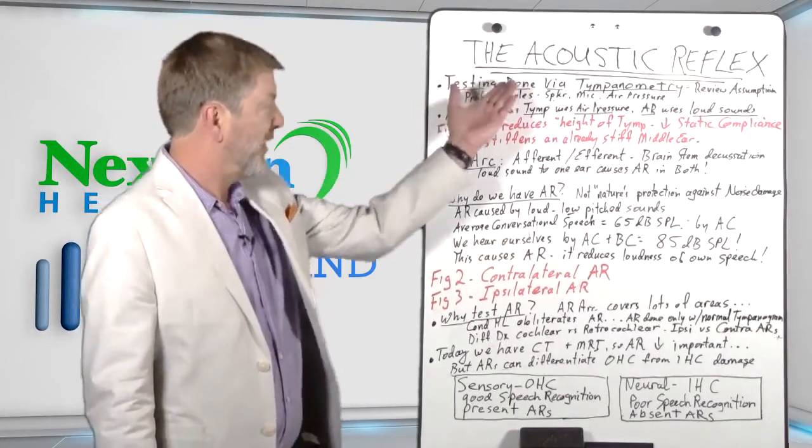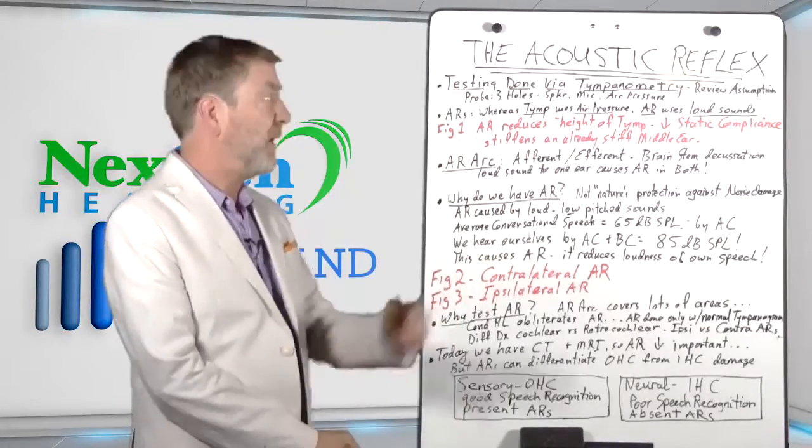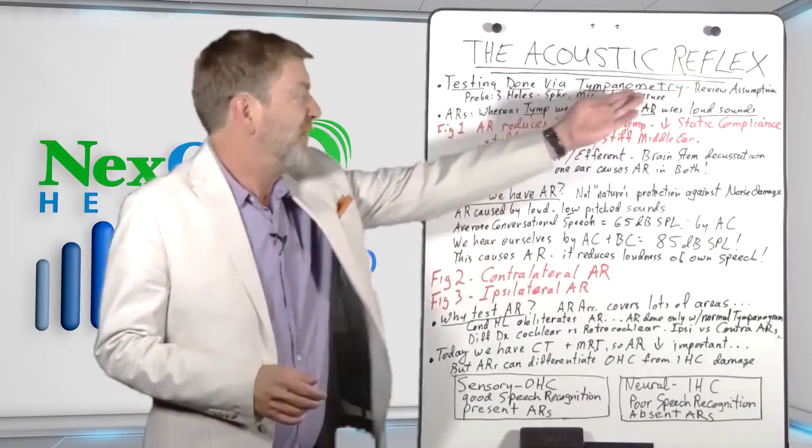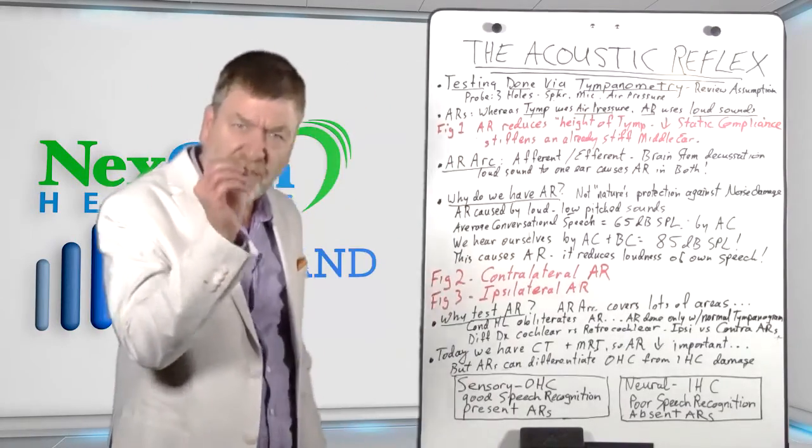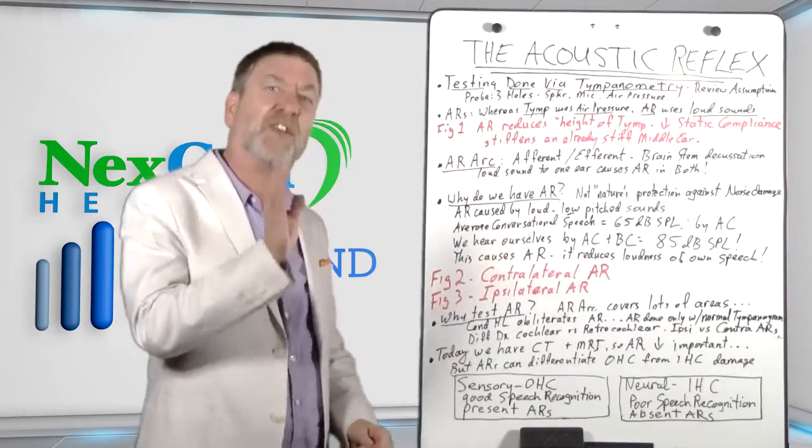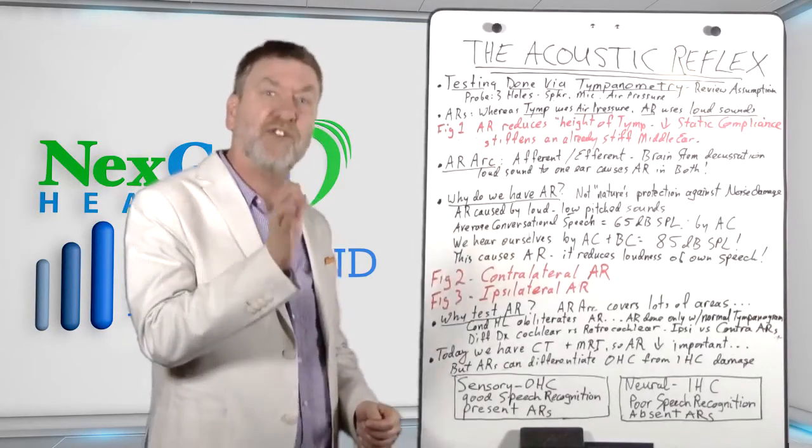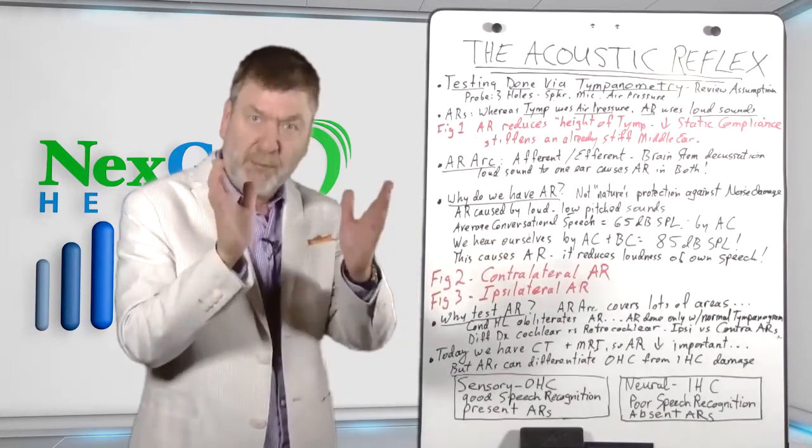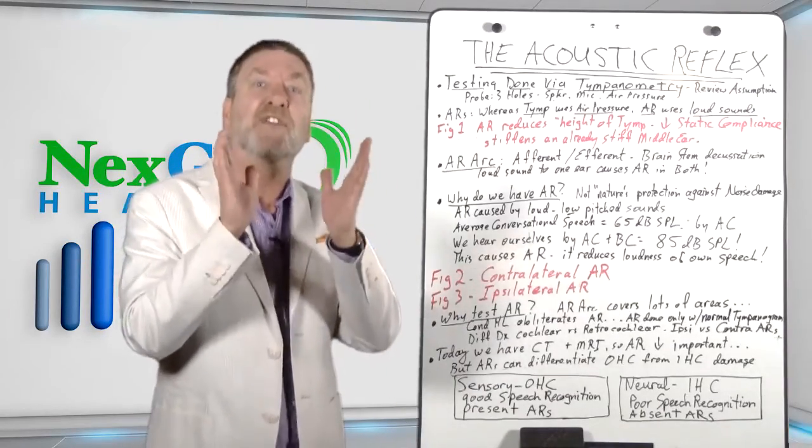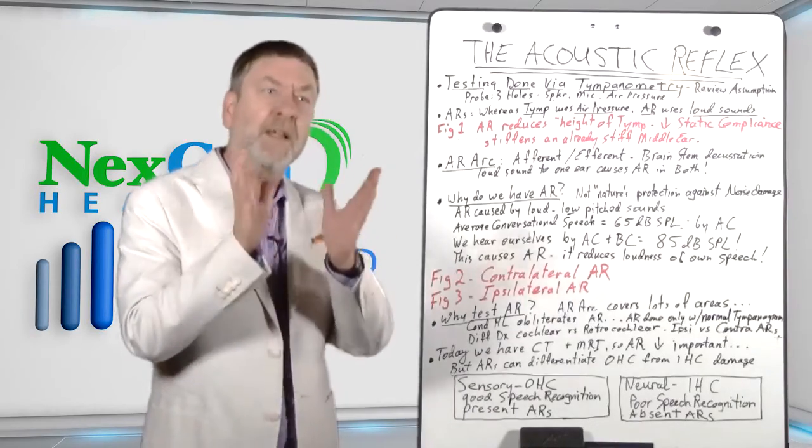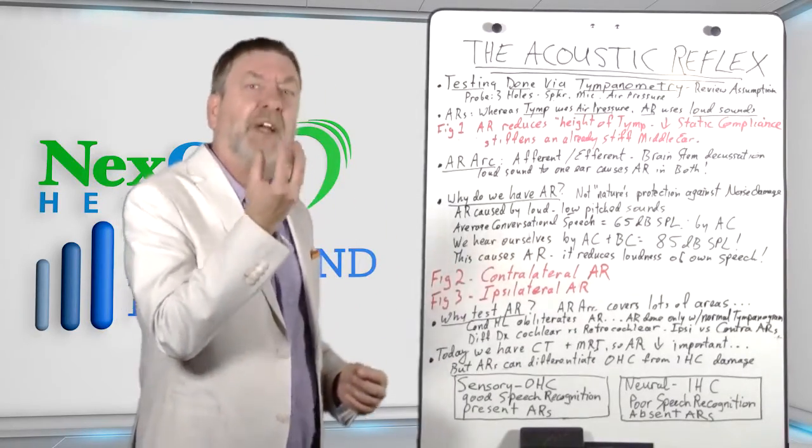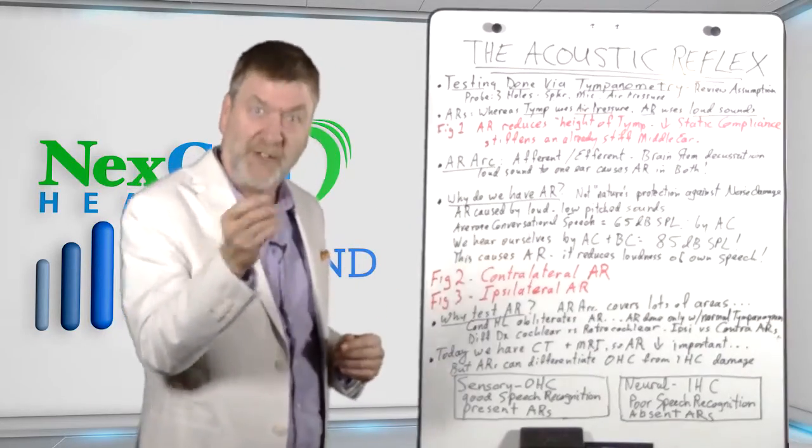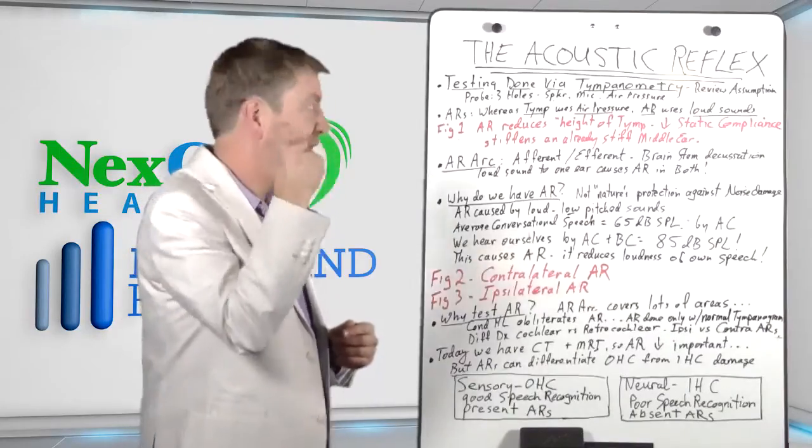Testing the acoustic reflex is done by using tympanometry. It's a sub-test of tympanometry. Let's quickly review the assumptions of tympanometry here. The main assumption is that the middle ear functions most efficiently at passing sound through it when air pressure on both sides of the tympanic membrane is even. Then the middle ear as a stiff system is least stiff and it is most compliant and thus passes most sound.